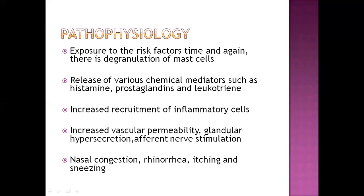The pathophysiology of rhinitis goes like this: when there is exposure to a risk factor, there is degranulation — abnormal degranulation occurs instead of normal granulation — specifically degranulation of mast cells. Because of this, various chemical mediators are released: histamine, prostaglandins, and leukotrienes. Mast cell degranulation occurs when any infection is about to occur in the body.